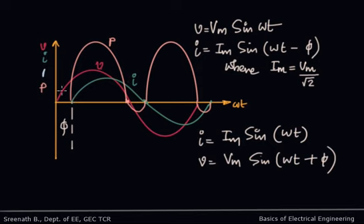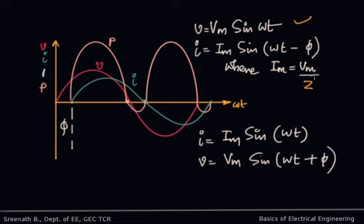In the phasor diagram, voltage, current, and power are all marked. Taking voltage as a reference, V = Vm sin(ωt) and current is given by I = Im sin(ωt − φ), where Im = Vm/Z. If instead current is taken as the reference, I = Im sin(ωt) and V = Vm sin(ωt + φ). From this diagram, V is the reference and I is lagging behind V by φ.